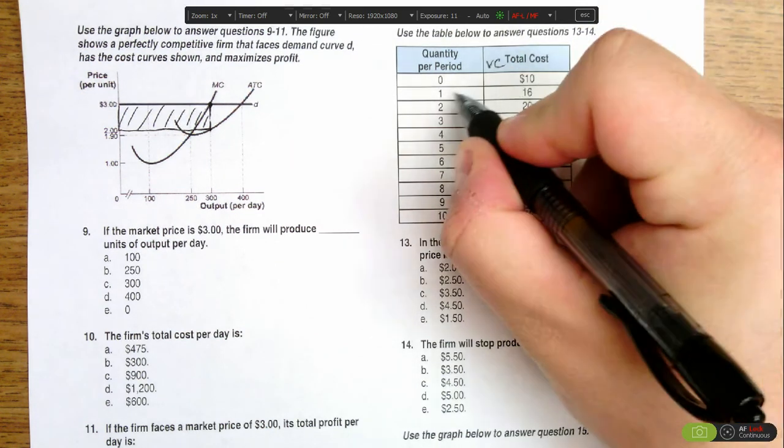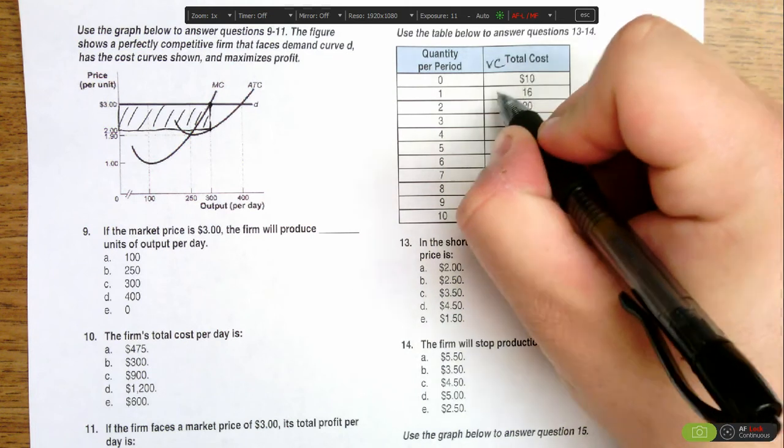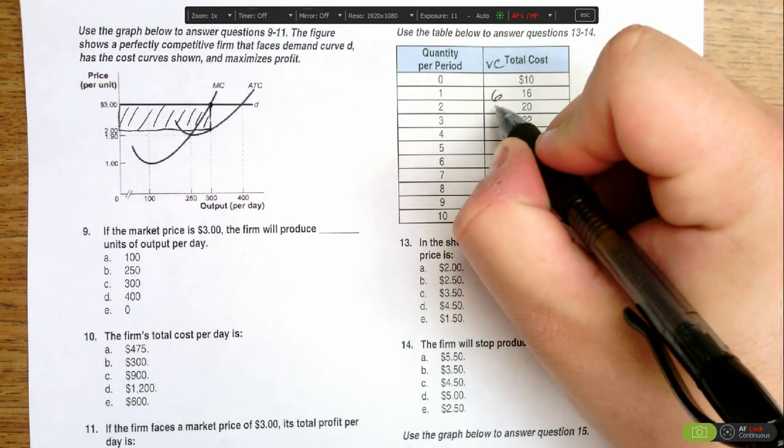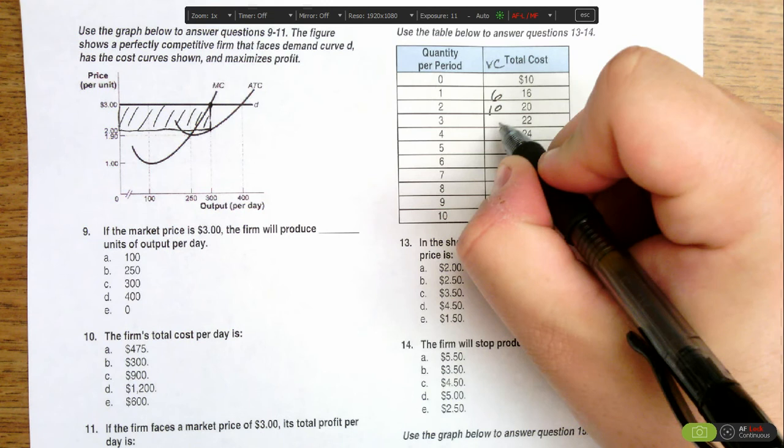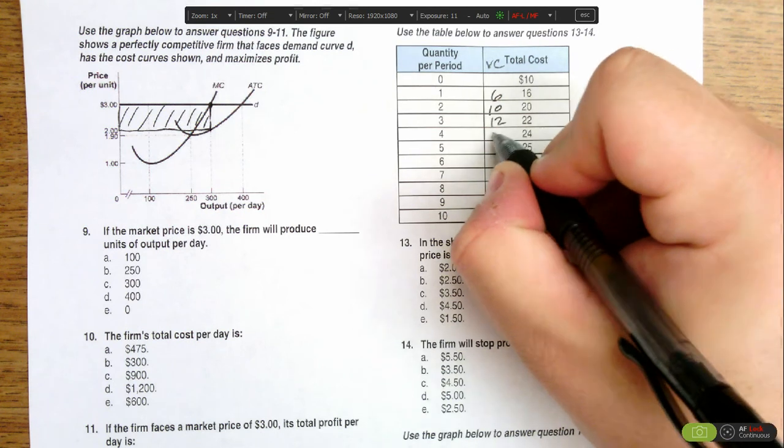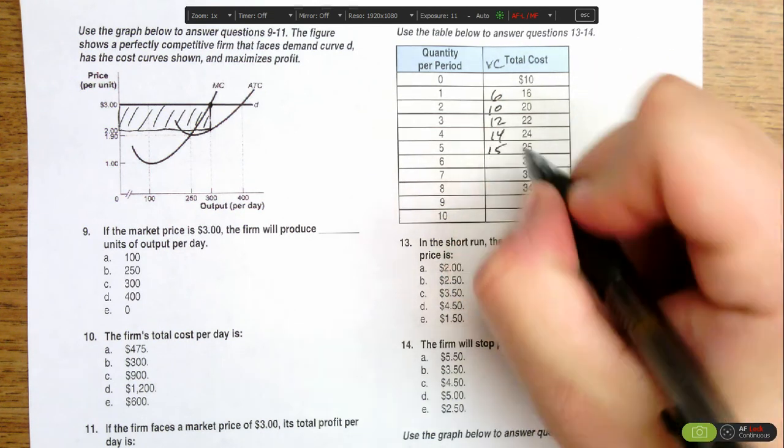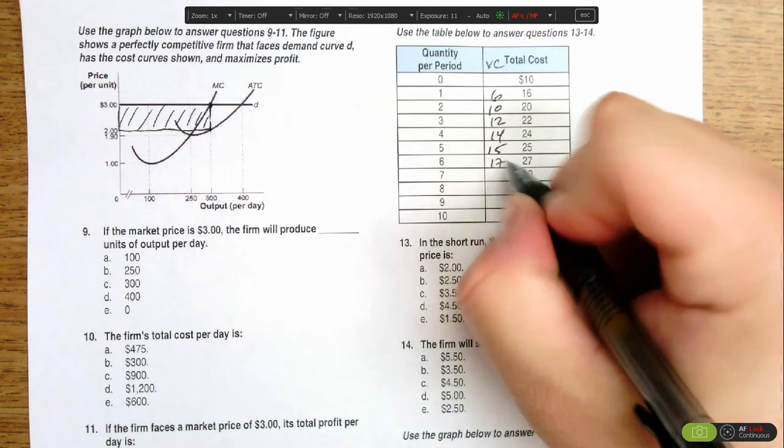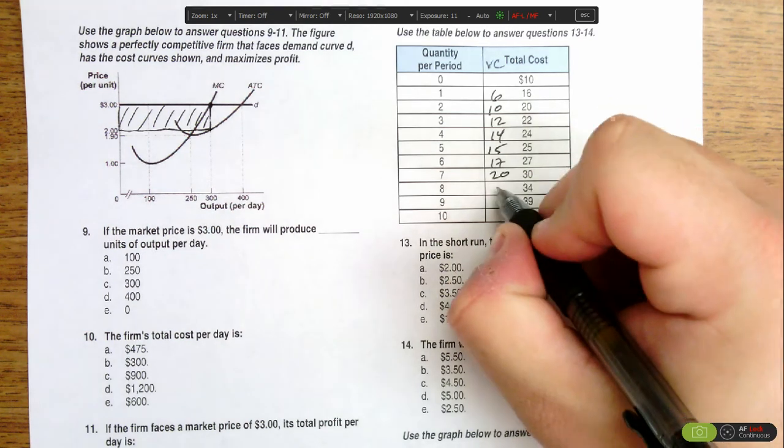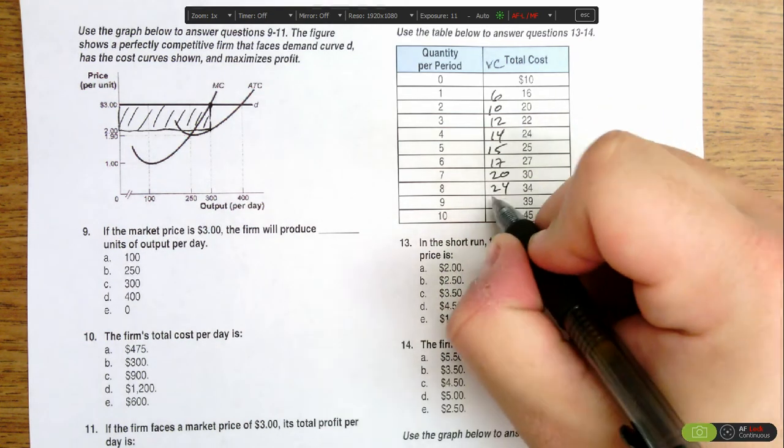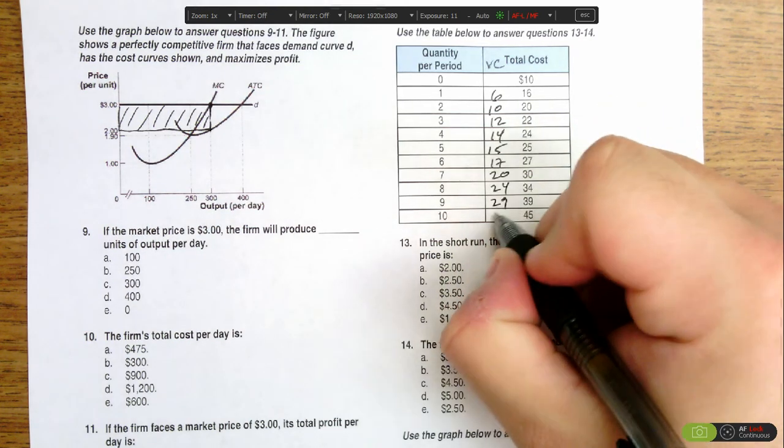We'd look here for one, $16 in total costs, subtract the $10, we've got $6 in variable costs. For one, $6; for two, $10; for three, $12; for four, $14; for five, $15; for six, $17; for seven, $20; for eight, $24; for nine, $29; for ten, $35.